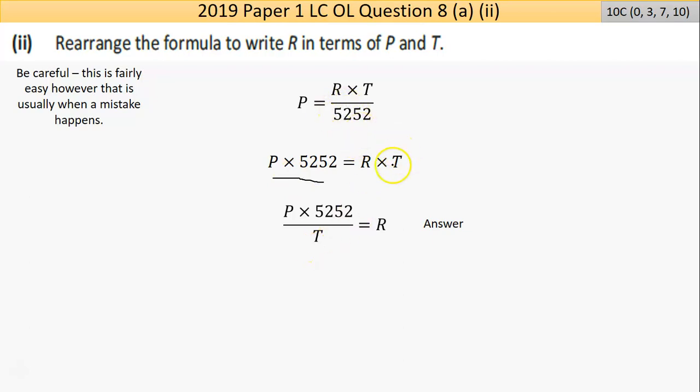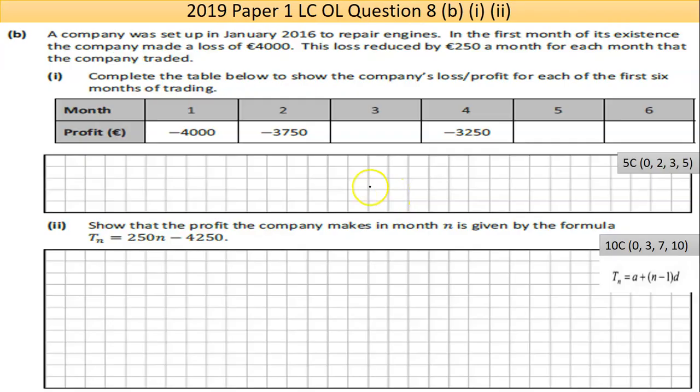I want to move the T. So the T is being multiplied on the right, when I move it across the equal, it becomes the opposite, so it becomes divided, and it divides into everything on the far side. I have it now, R in terms of P and T. There's not much more I can do. That's fairly handy, as long as you don't underthink it and think it's harder and start doing crazy things.